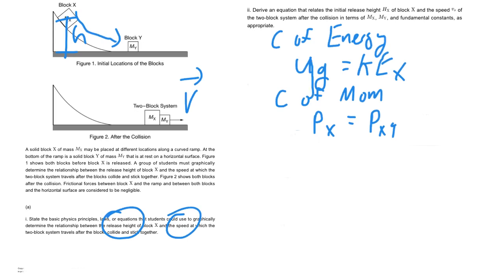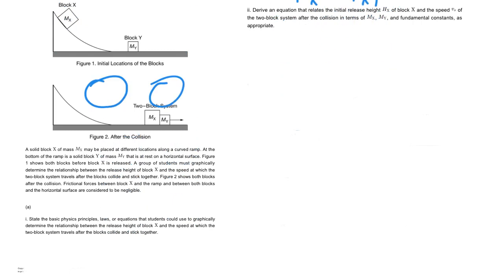So let's go ahead and do that. We will use conservation of energy. So we know UG equals KE. Now this is only for block X. So we'll go MGH for block X should equal 1/2 MV squared for block X.